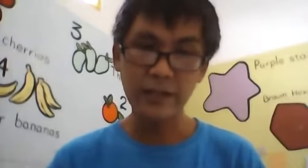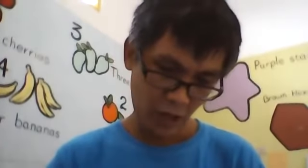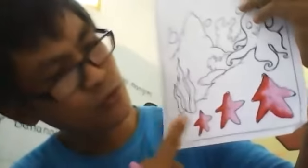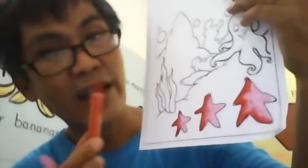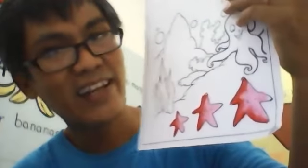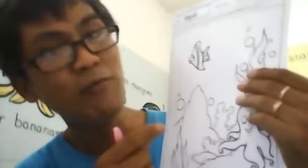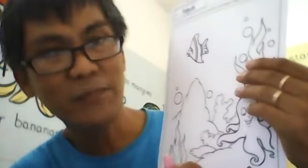Mr. Teguh will show the result of coloring the starfish. Mr. Teguh used two colors: red and pink. You may choose other colors — it's up to you. Now we will color the other pictures.